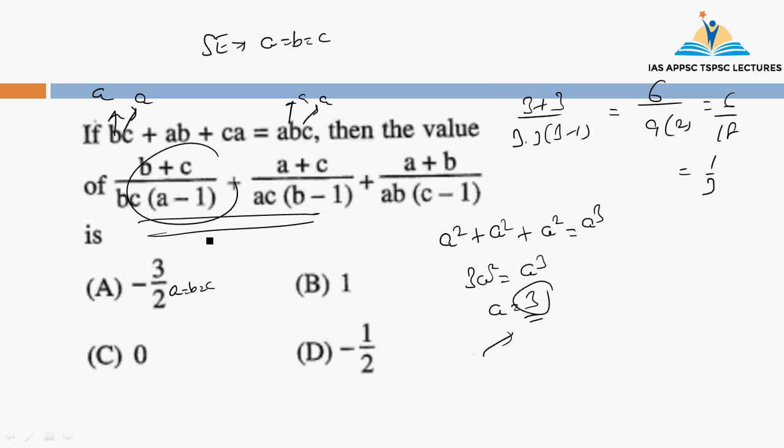That means the final value is 1 by 3. So here we have three expressions. Each one gives us 1 by 3. That means 1 by 3 plus 1 by 3 plus 1 by 3. Final value is 3 times 1 by 3 equals 1. That means option B.